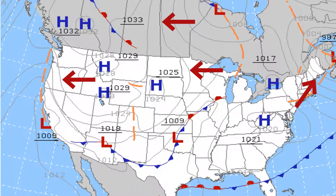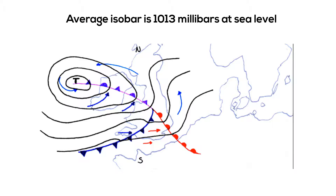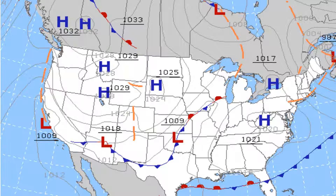Next, an isobar's average pressure is measured in millibars and it is one thousand and thirteen. If it is below this, you have a low pressure area. If you notice where the L is, you have one thousand and nine, so that would be considered low pressure.